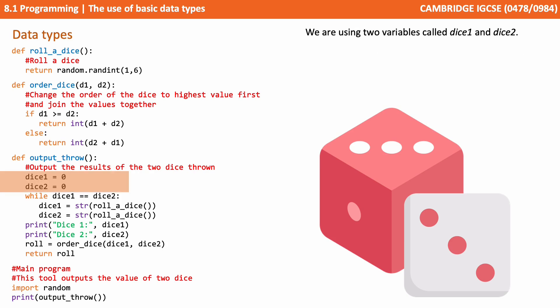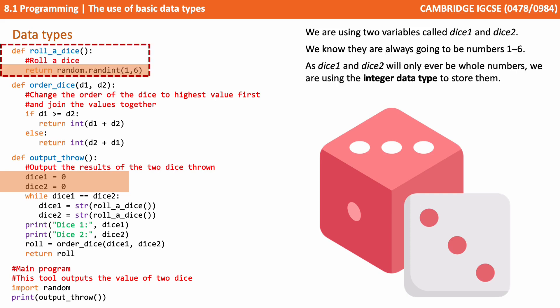We can see here in this line we're using two variables called dice1 and dice2. We know from looking at the roll a dice subroutine at the top of the screen that we're always going to be storing the numbers 1 through 6, which makes sense because we're simulating the roll of a standard six-sided dice. As dice1 and dice2 will only ever be whole numbers, we're going to use the integer data type to store them.